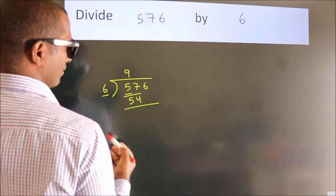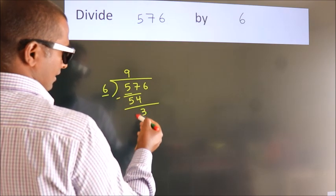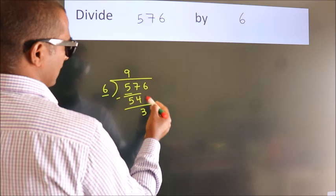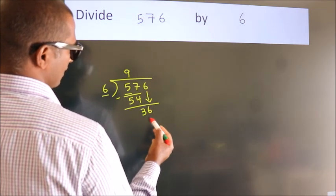Now we should subtract. We get 3. After this, bring down the beside number. So 6 down. So 36.